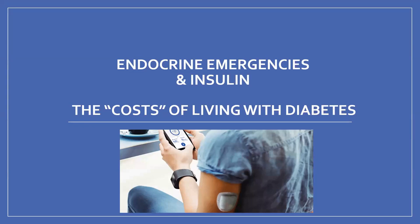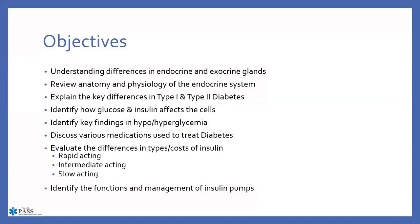We'll pick back up here with the endocrine emergencies and insulin and the cost of living with diabetes. This information has been updated from two years ago. The numbers really didn't change all that much, which is good and bad — good in that they didn't go up, and bad in that you'll see how much money we're actually spending on diabetic care.